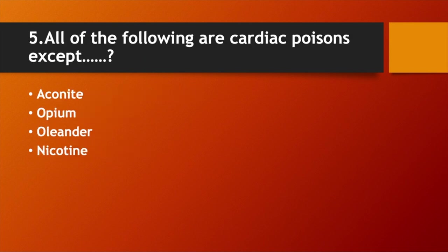All of the following are cardiac poisons except: Option A. Aconite. Option B. Opium. Option C. Oleander. Option D. Nicotine. Answer: Option B. Opium.